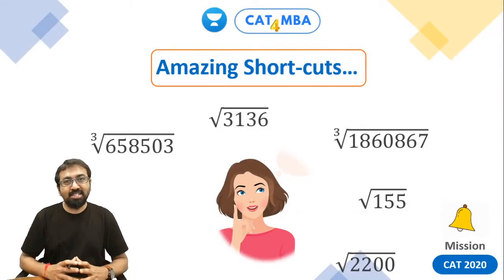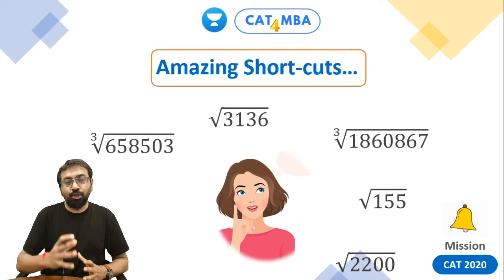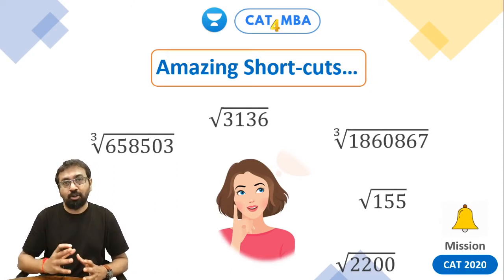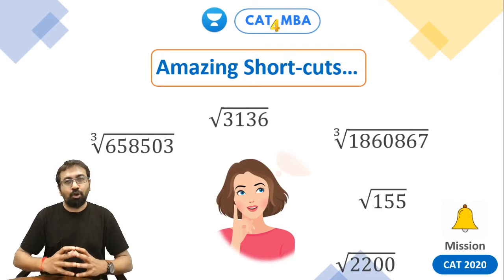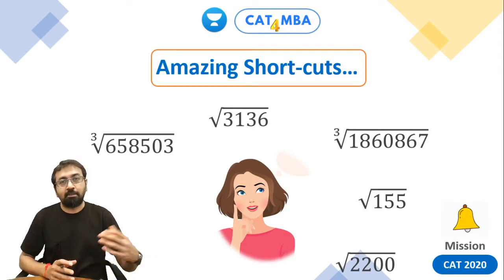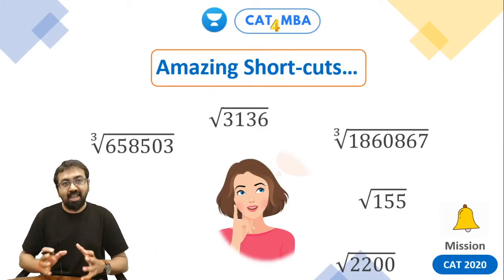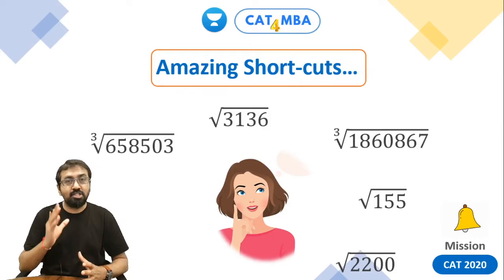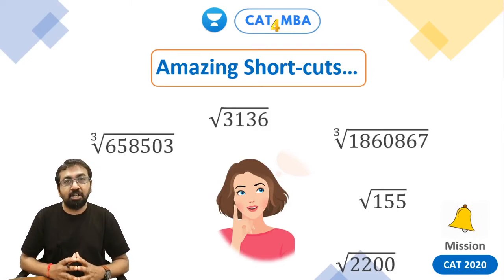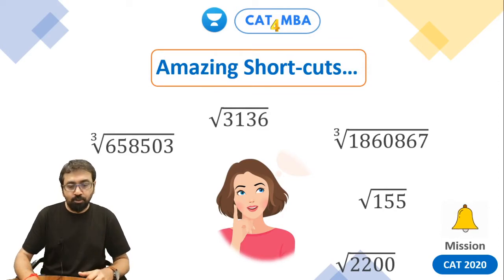Hey guys, welcome to this Unacademy CAT for MBA channel. In this video I am going to show you some amazing shortcuts to find out square roots and cube roots. I am sure all of you must have learned some Vedic Maths method to multiply numbers, to find squares and all, but finding square roots and cube roots is rarely available. So this is what I am going to teach you and it will be very useful for any competitive exams.